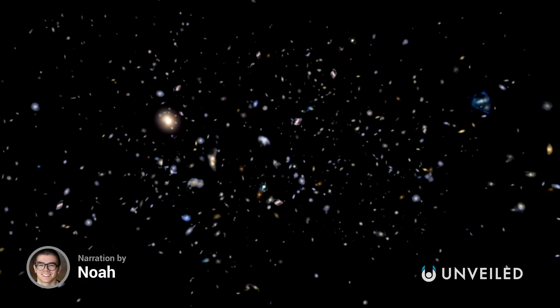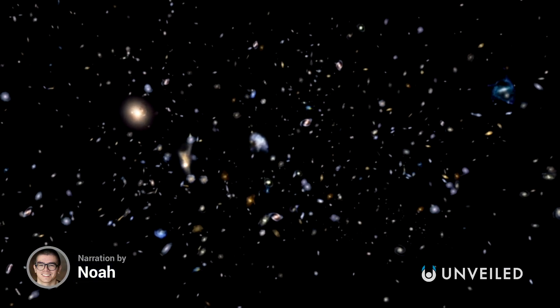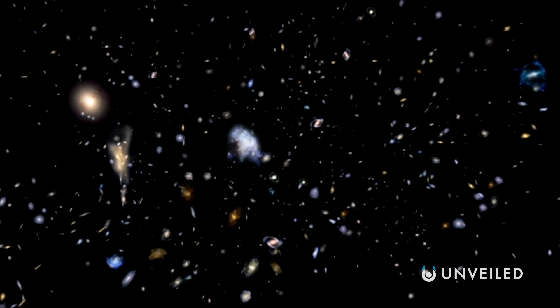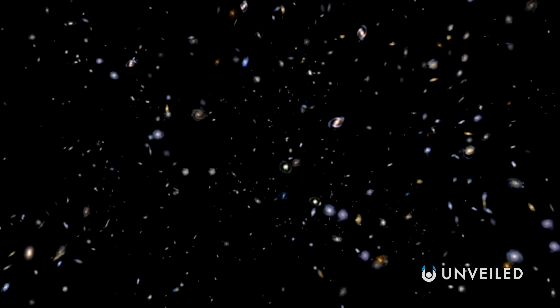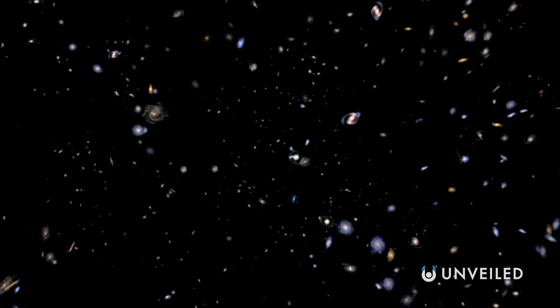Everything in the universe takes time to travel through space. Even at the speed of light, the fastest speed we know of, light from the sun still takes more than eight minutes to arrive on Earth because of the vastness of just the solar system.